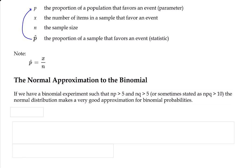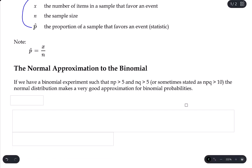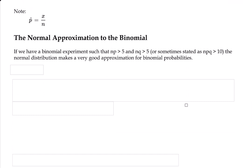So it turns out that as long as you have a binomial experiment where n times p is greater than 5 and n times q is greater than 5. And I've seen some textbooks state this as n times p times q is greater than 10, which is actually a tighter restriction. But as long as it meets one of these criteria, that's fine. In that situation, the normal distribution makes a very good approximation for binomial probabilities.